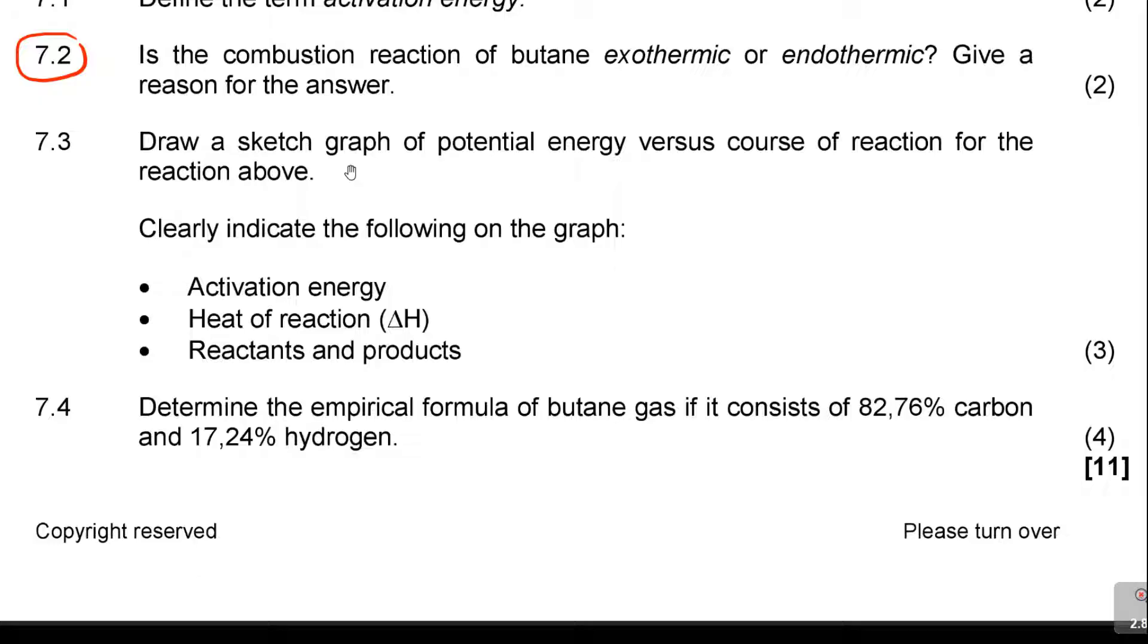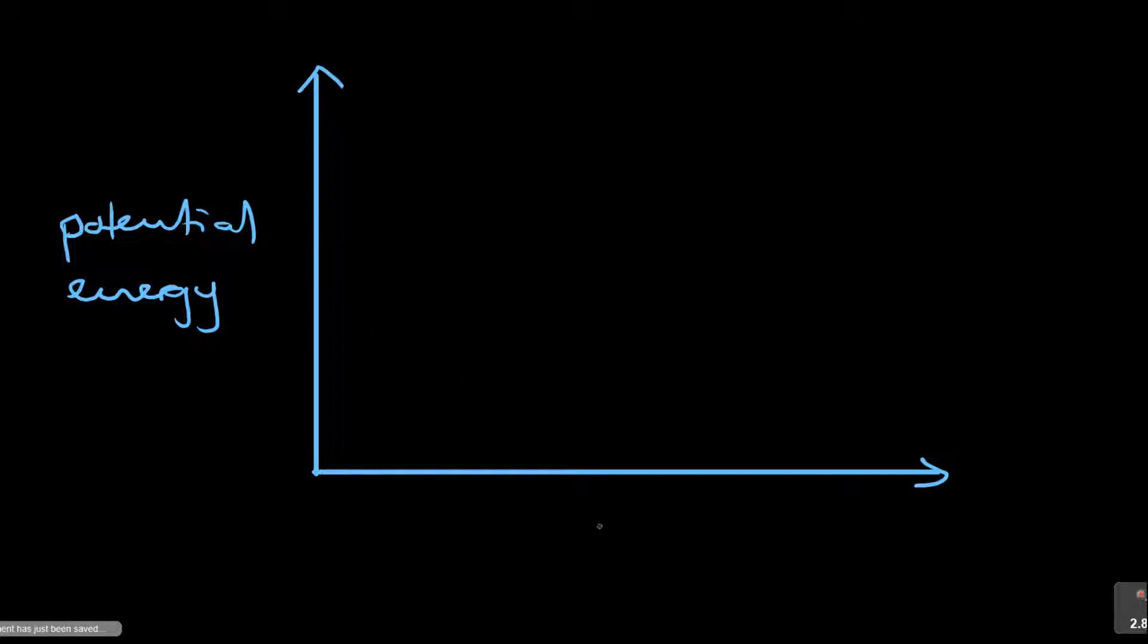So draw a sketch graph of potential energy versus course of reaction for the reaction above. Clearly indicate the following on the graph: activation energy, heat of reaction, reactants and products. This you must have practiced during school. So you are drawing a graph for the potential energy versus time graph of an exothermic reaction.